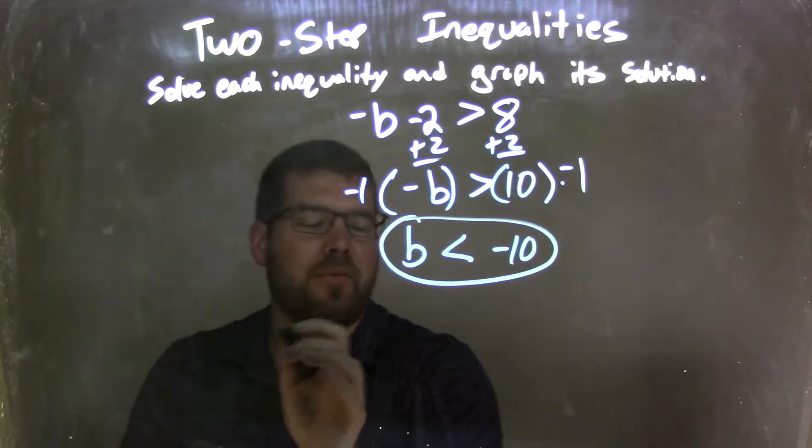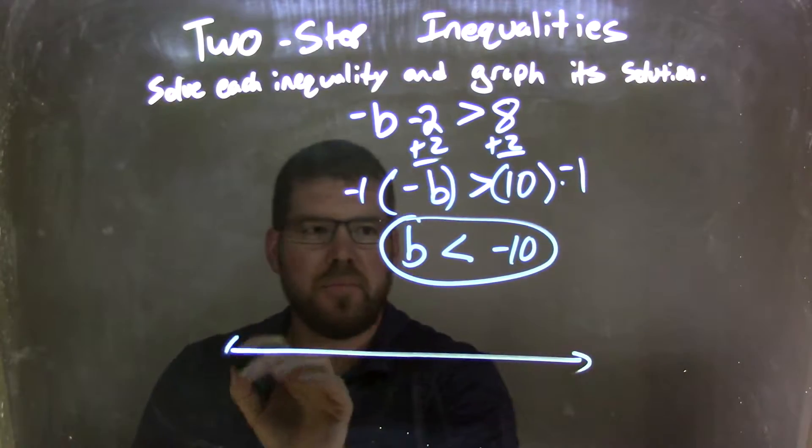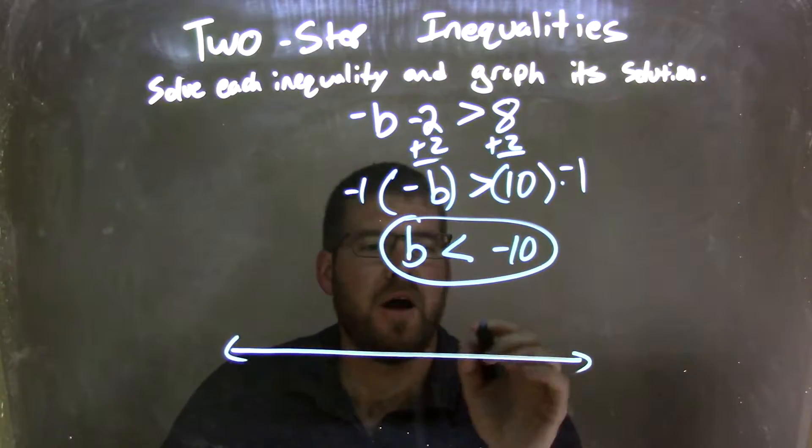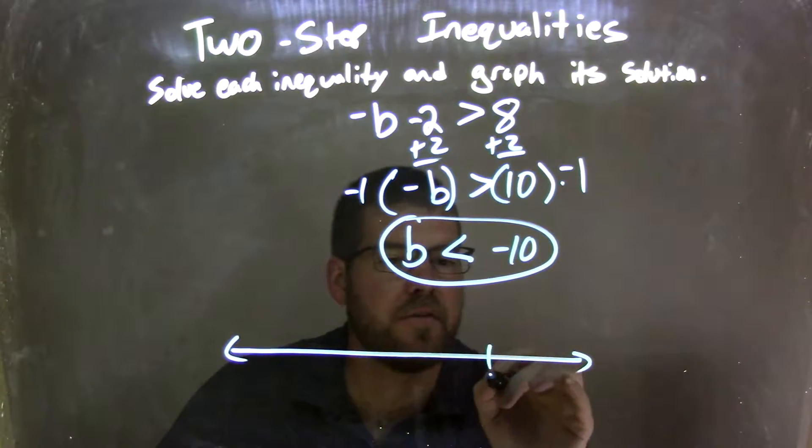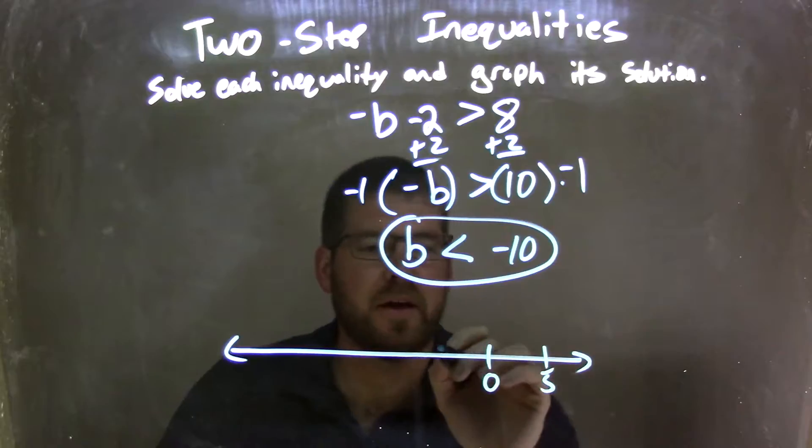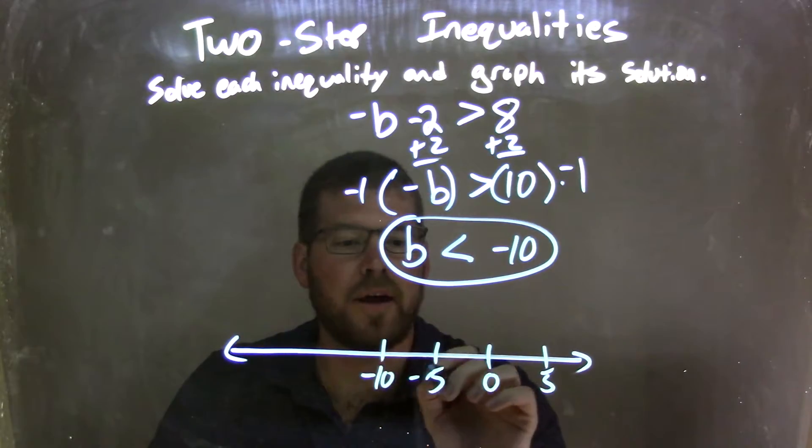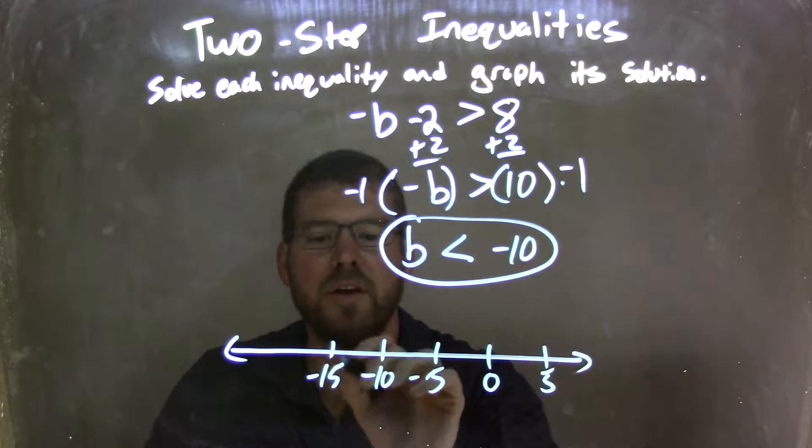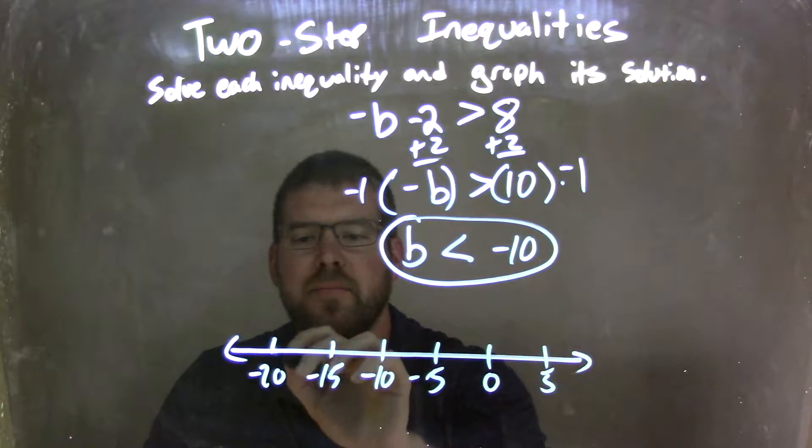So now I need to make my number line and graph this. Let's go by 5. So we have 0, here's 5, and negative 5, and negative 10, and negative 15, and negative 20.